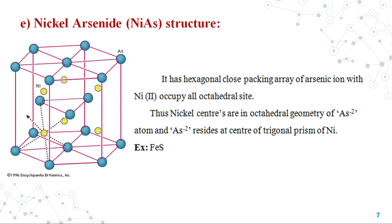The fifth one is the nickel arsenide structure. It has a hexagonal close packing arrangement of arsenic ions, with Ni2+ ions occupying all the octahedral sites. In this particular structure, the corner particles and face-centered particles are occupied by Ni2+ ions. If you look at this structure another way, the nickel centers are octahedrally surrounded with arsenic atoms, and each arsenic ion resides at the center of a trigonal prism of nickel. This particular structure is seen in iron sulfide.